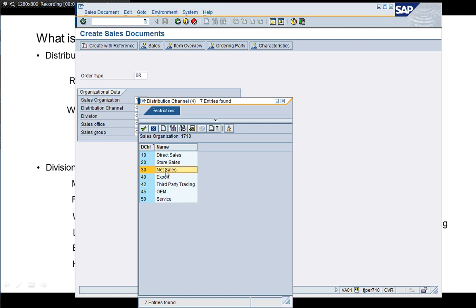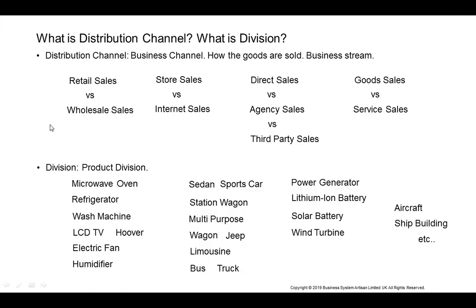What is distribution channel? For example, if you sell the same product by store sales or internet sales, or if you do export, third-party business, agent sales, direct agency sales, retail business, or wholesale business — or in a service or project context where you sell parts as goods sales or service sales — these distinctions are called distribution channel. It describes how the goods are sold, typically store sales or internet sales.